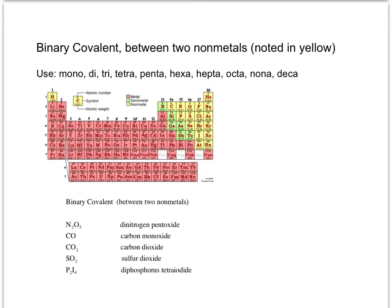Moving away from ionic compounds, next is binary covalent. Each of these covalent molecules has only two elements — that's why they're binary. They're covalent because they're formed between two nonmetals. In that case, naming is completely different: you use the prefixes mono, di, tri, tetra, penta, hexa, hepta, octa, nona, and deca.